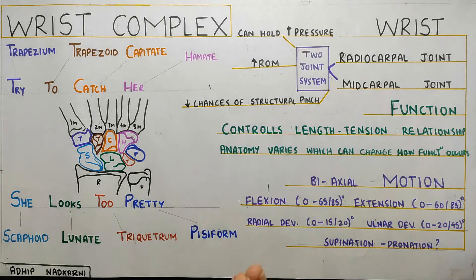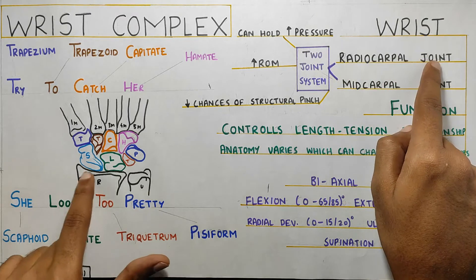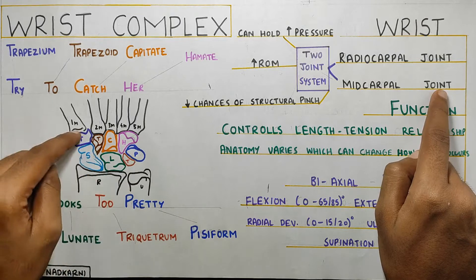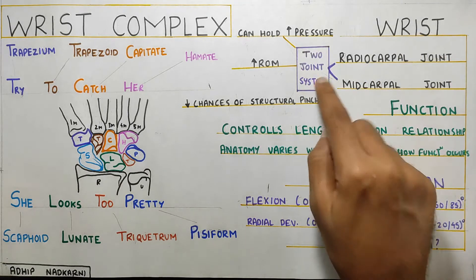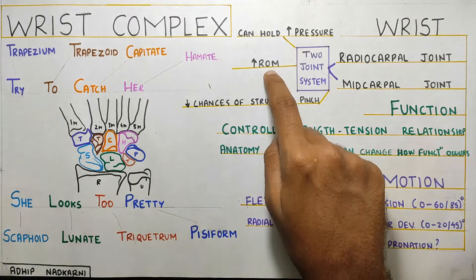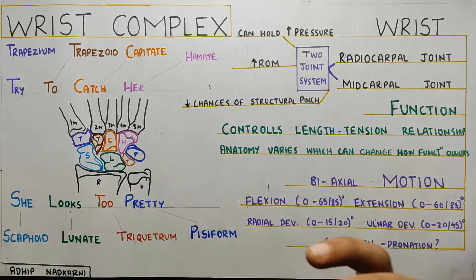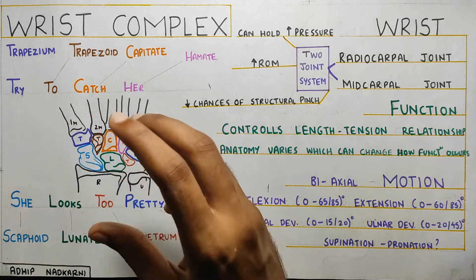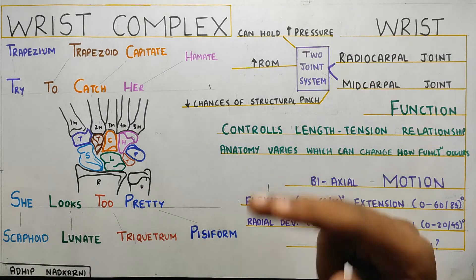Next, looking at the articulation — this joint has the radiocarpal articulation, which is basically the radius articulating with the carpals, and then the midcarpal articulation, which is the carpals articulating with the other carpals. This is called the two-joint system. It explains the high range of motion, how the wrist joint can hold a lot of pressure, and how the many structures at the wrist have very little chance of getting pinched during movement.